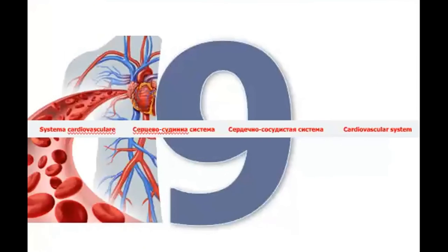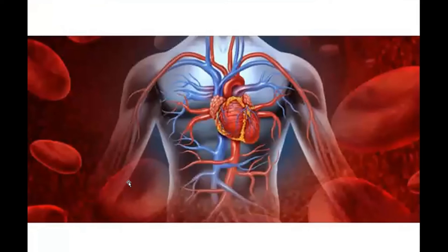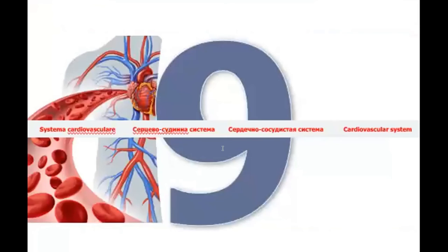Next, cardiovascular systems. First variant: heart, arteries, and veins — that is one variant of three. Second variant: heart, vessels, and blood — a second set of three. Third variant: heart with blood, vessels, and lymph — a third set of three. It is two parts of the cardiovascular system. Please remember: three, three, and three together equals number nine.